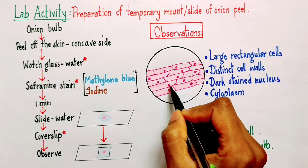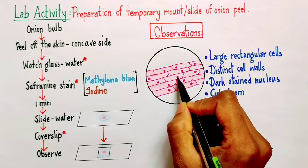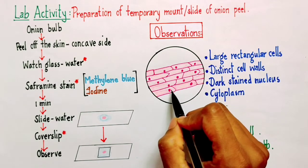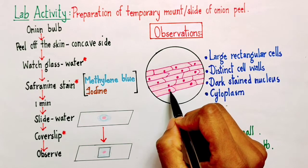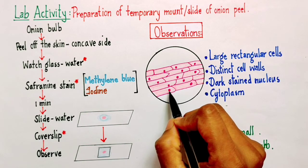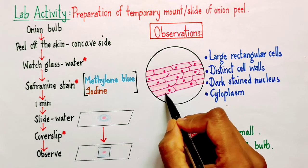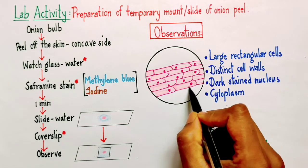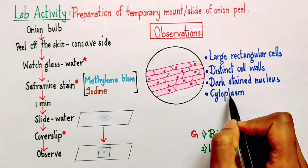As you can see, each of the cell has its own distinct cell wall, and in each of the cell we are going to see a dark stained component that is nothing but your nucleus. The nucleus appears as a dark dot because it takes too much of stain because of its chemical composition. Other than this, this portion which I have painted in light pink is basically the cytoplasm.